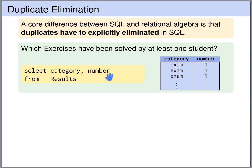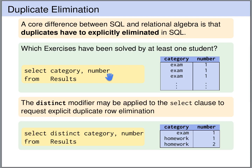We might want to eliminate these duplicates. We are only interested that exam 1 has been solved by some student; we do not care about the duplicates. SQL allows us to eliminate duplicates by adding the DISTINCT modifier — we write DISTINCT after SELECT, and thereby all duplicate rows from the result will be eliminated.